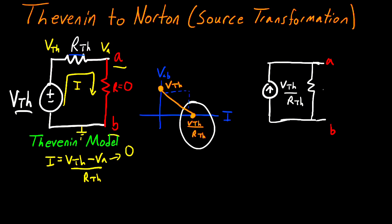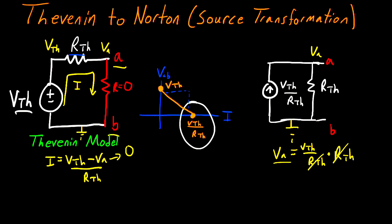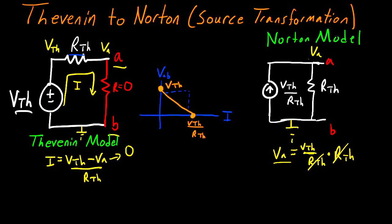If this is our equivalent node A and node B, we have to make sure we get that same voltage there. One way to ensure the same potential between points A and B is to put a resistor here with a value of R_Thevenin. Analyzing this circuit — calling this the ground and this node V_A — we write the equation for R_Thevenin: V_A equals the current V_Thevenin divided by R_Thevenin, multiplied by the resistance R_Thevenin, which cancels out, giving V_A equal to V_Thevenin. Based on this, we satisfy both points on the graph, and this circuit has the same exact behavior as the Thevenin circuit. This model is called the Norton model.